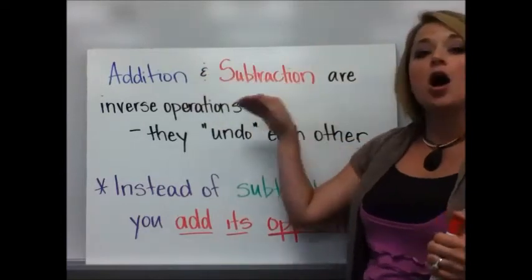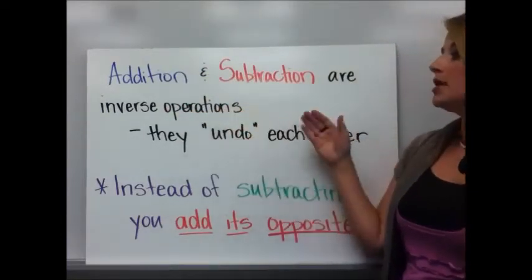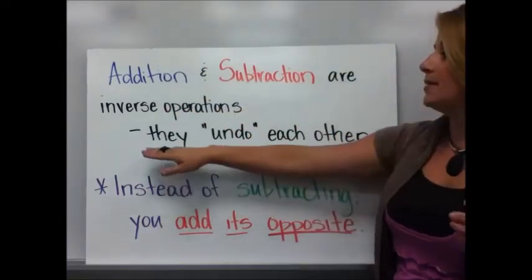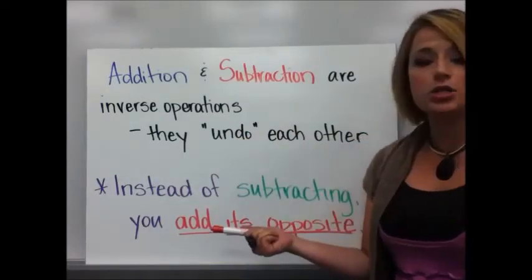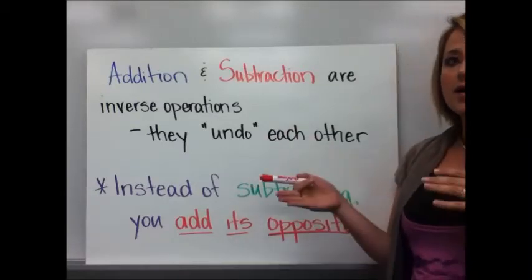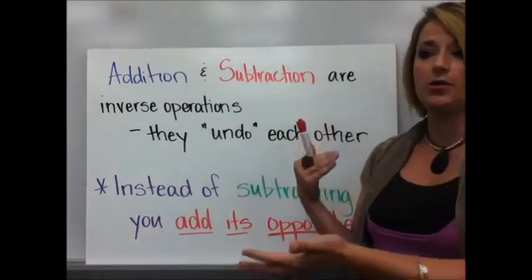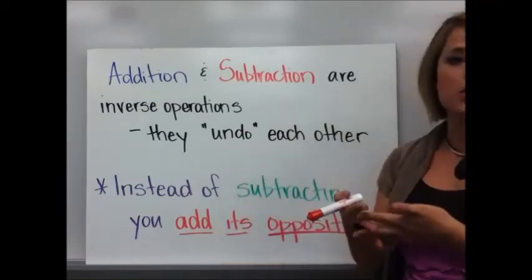Addition and subtraction are inverse operations. So in plain words, that means they undo each other. I start with 12, I subtract 2 from that, I get 10. Well, how do I get back to 12? I add 2. Negative 2 and positive 2, they undo each other.